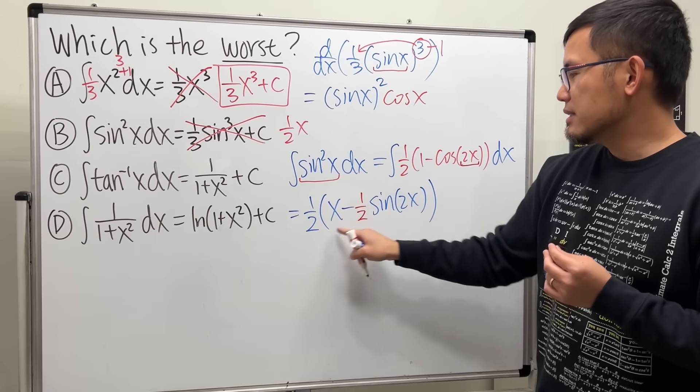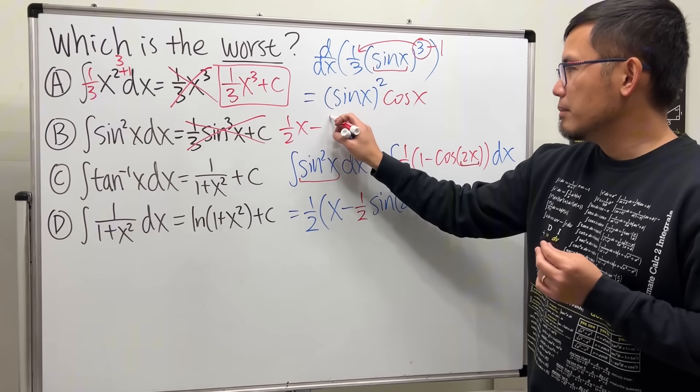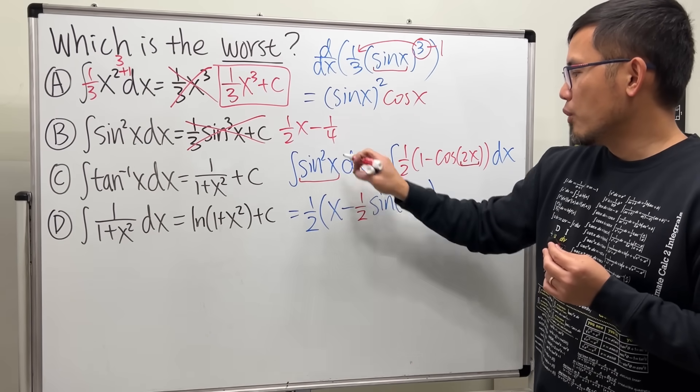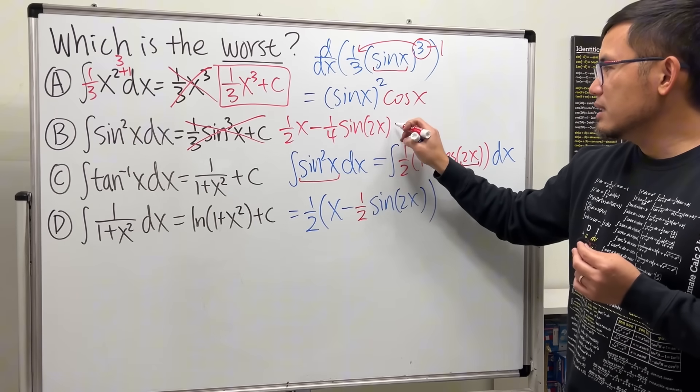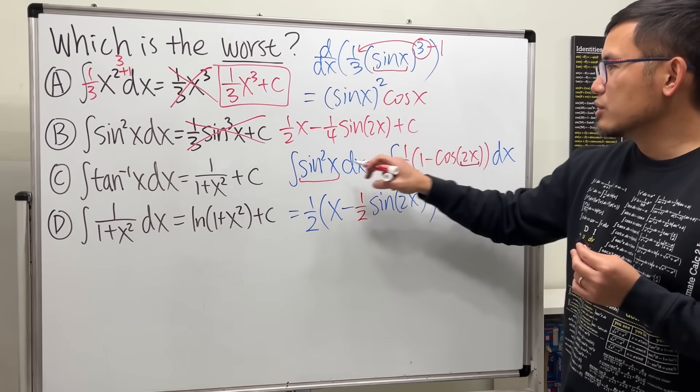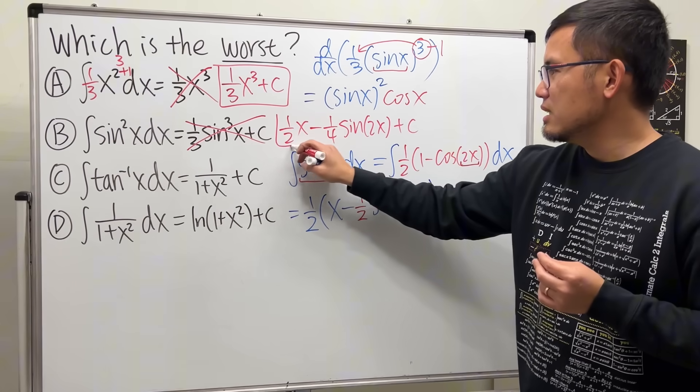Distributing and writing down the final answer: we have x/2 minus one fourth sin(2x), plus C.